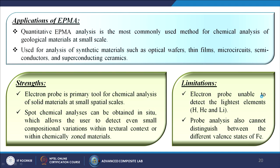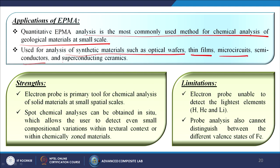EPMA applications: quantitative EPMA analysis is the most commonly used method for chemical analysis of geological materials at small scale. It is used for synthetic materials such as optical wafers, thin films, microcircuits, semiconductors, and superconducting ceramics. Strengths: it is primarily a tool for chemical analysis of solid materials at small spatial scales; spot chemical analysis can be obtained in situ, detecting even small compositional variations within textural context or chemically zoned materials. Limitations: electron probe cannot detect the lightest elements like hydrogen, helium, or lithium, and cannot distinguish between different valence states of iron.